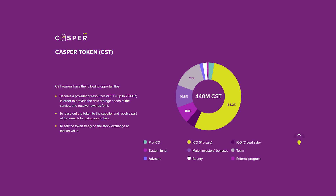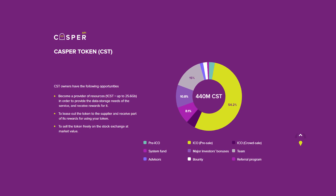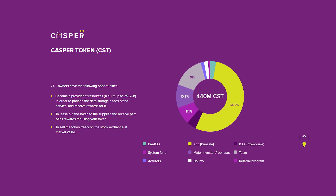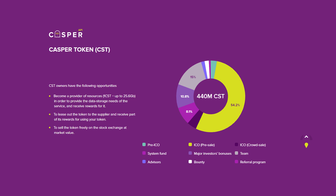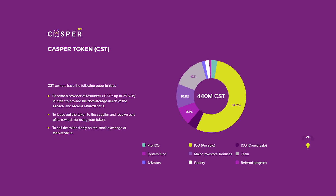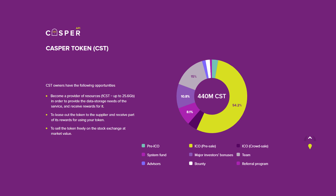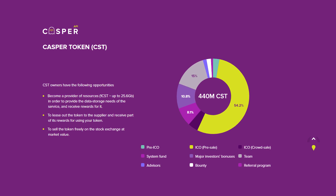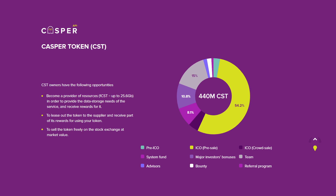The pre-ICO period ended in December 2017. $1,040,000 was collected during this period. The ICO itself is planned for May 2018. Tokens are distributed according to the following plan: 54.2% to the pre-sale, 4.5% to the crowdsale, 15% to the team, 8.1% to the fund of the system, 10.8% to bonuses to major investors, 1.6% to the project advisors, 2% to the bounty, 0.9% to the referral program, and 2.9% to the pre-ICO.